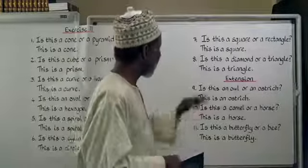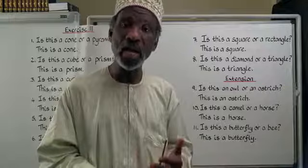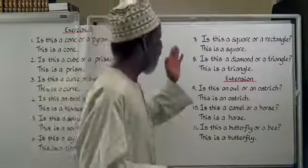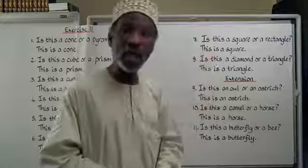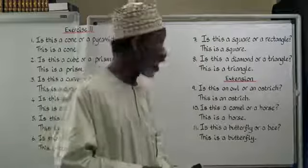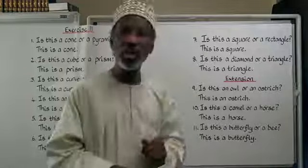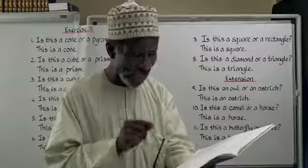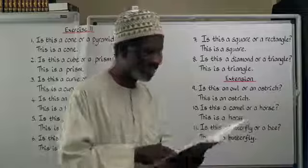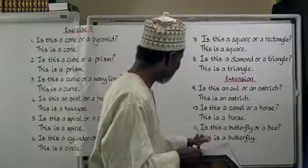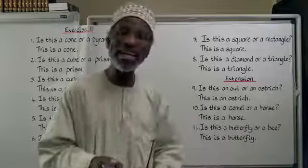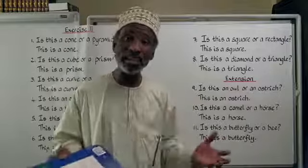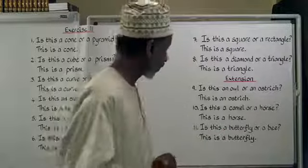Number 8: is this a diamond or a triangle? Diamond is مُعَيَّنٌ and triangle is مُثَلَّثٌ. هَلْ هَذَا مُعَيَّنٌ أَمْ مُثَلَّثٌ. This is a triangle — هَذَا مُثَلَّثٌ. That is the end of exercise 11. I've added numbers 9, 10, and 11 as an extension to give you more practice — practice makes perfect.